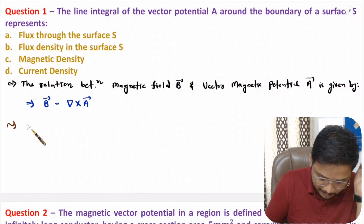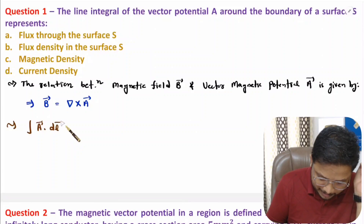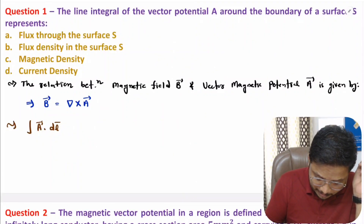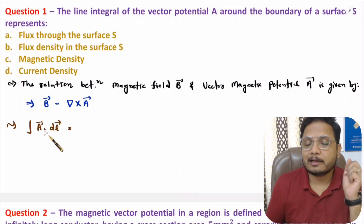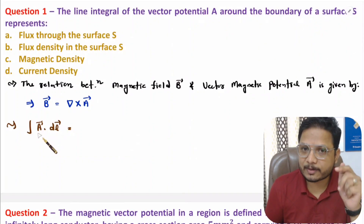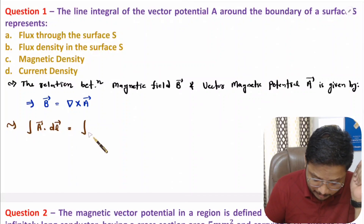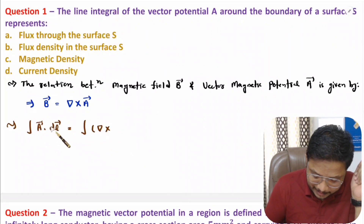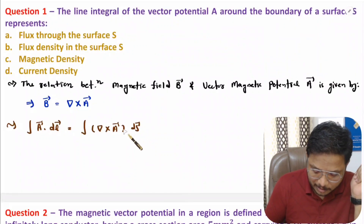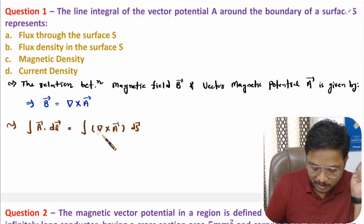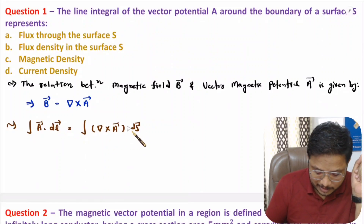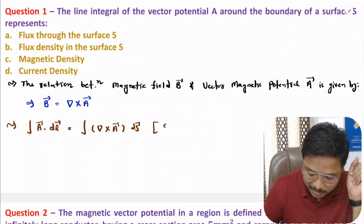Here we are dealing with the calculation of the line integral of vector magnetic potential. A line integral can be converted into a surface integral using Stokes' theorem. As per Stokes' theorem, if you have a line integral of a function, you can convert it in terms of a surface integral using the curl of that function.